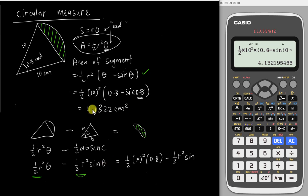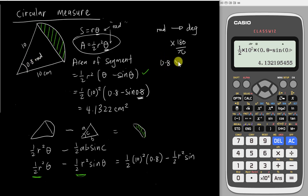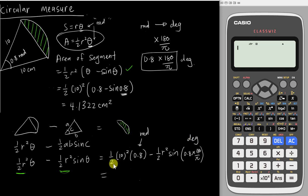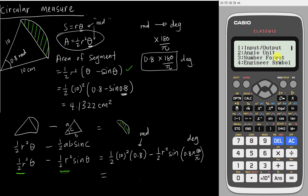But when your expression has sine, cos, or tangent, you always need to check your angle units. If you want to use the calculator in degree mode with the sine function, you need to convert the radian angle to degree. The rule is to multiply by 180/π. So to change 0.8 radian to degree, you multiply 0.8 × (180/π).